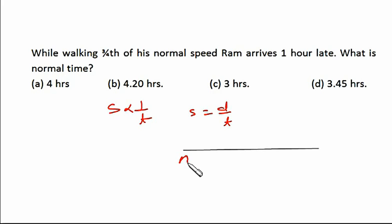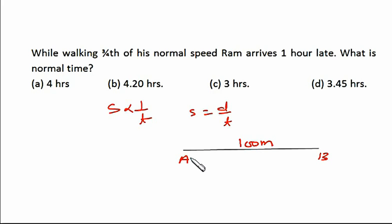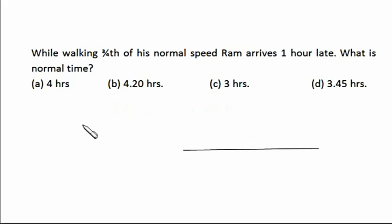Let's understand this concept. Say we have to cover a distance A to B — maybe 100 meters. If this distance is fixed and Ram doubles his speed, he'll cover it in half the time. If he does his speed three times, he'll take one-third of the normal time. Similarly, if he makes his speed half of normal, he'll take double the time. If one-third of normal speed, he'll take three times the normal time. Assume normal time is one unit.